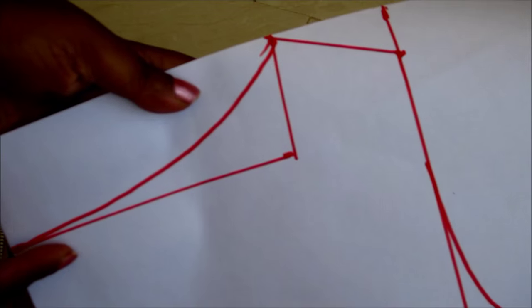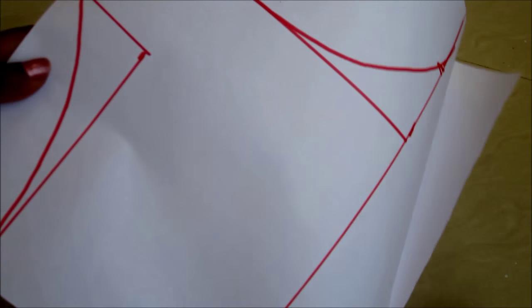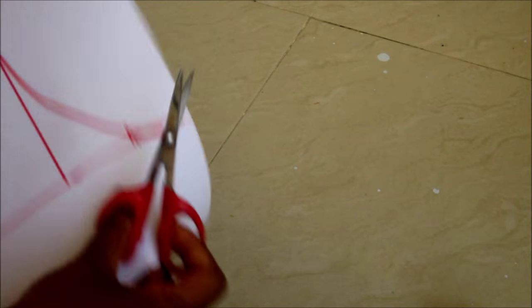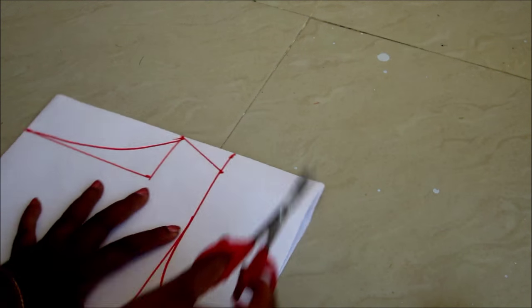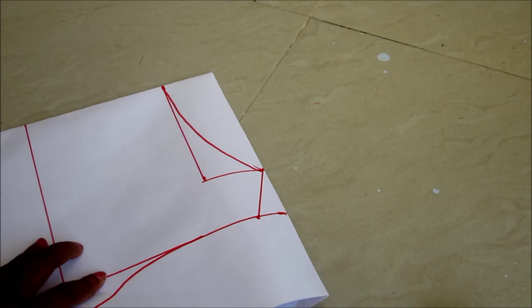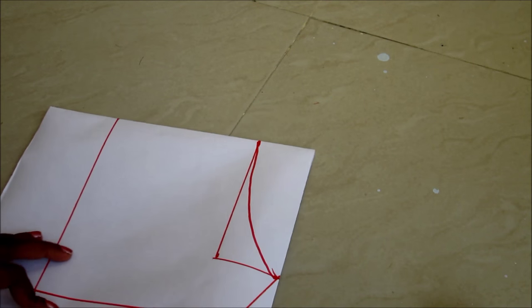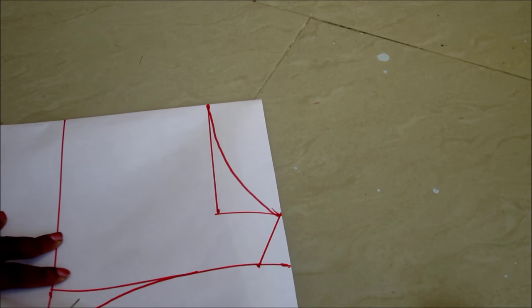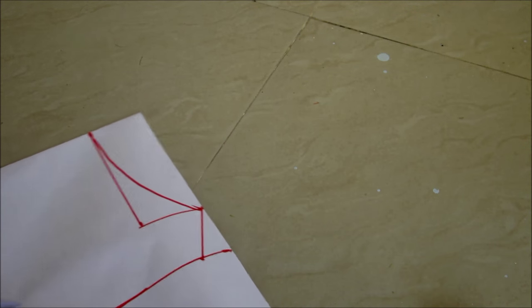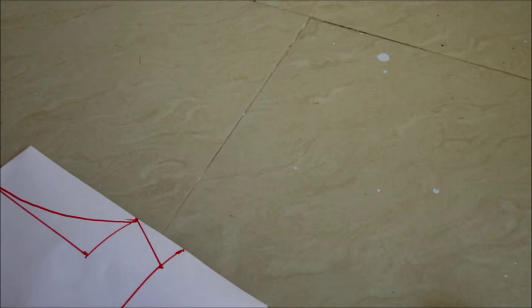Going for 1.5 to 2 inches, the neckline would be settled on your neck bone. And if you want to go beyond 3 inches, it will come below the neck bone.